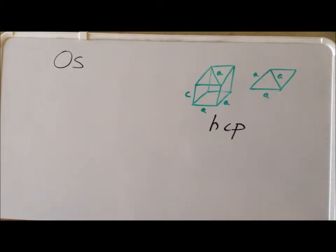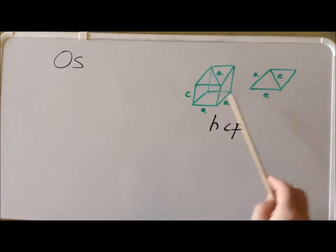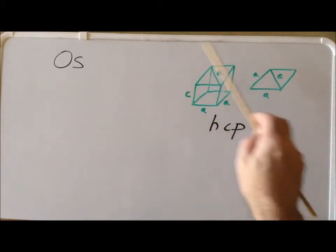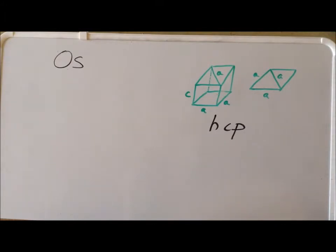The unit cell for the hexagonal closed-packed structure is actually rhombohedral, and we are using the same technique that we have used before to determine the density of a metal by focusing on a single unit cell, calculating the mass of the unit cell, calculating the volume of the unit cell, and then using those two data to compute the density of the metal.